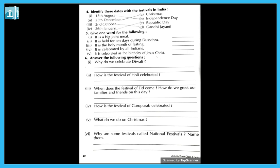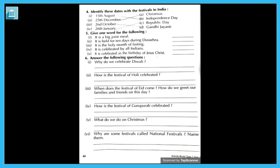Third one: when does the festival of Eid come, and how do we greet our families and friends on this day? Answer: the festival of Eid comes after a whole month of fasting. We greet our families and friends by saying 'Eid Mubarak' on this day — hum ek doosre ko 'Eid Mubarak' bol ke greet karte hain.